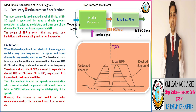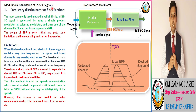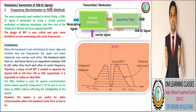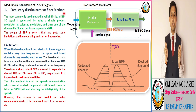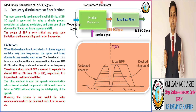Now we take the most important topic for your examination as well as for your understanding, that is the modulator or generation of SSB signal. The first method is the frequency discriminator or filter method. It is the most commonly used method in which a DSB signal is generated by using a simple product modulator.